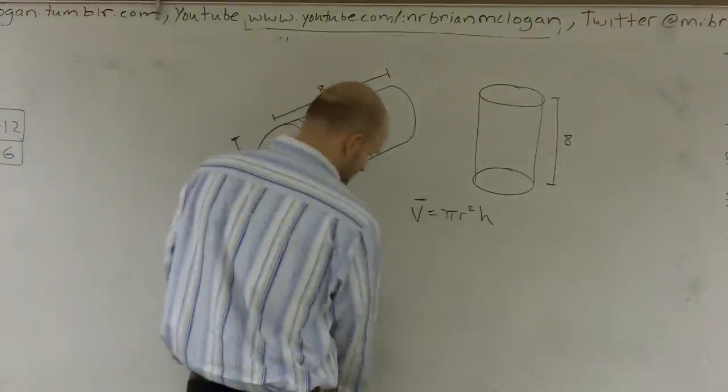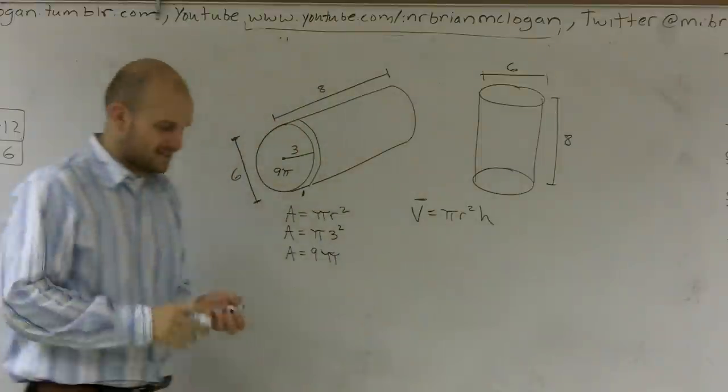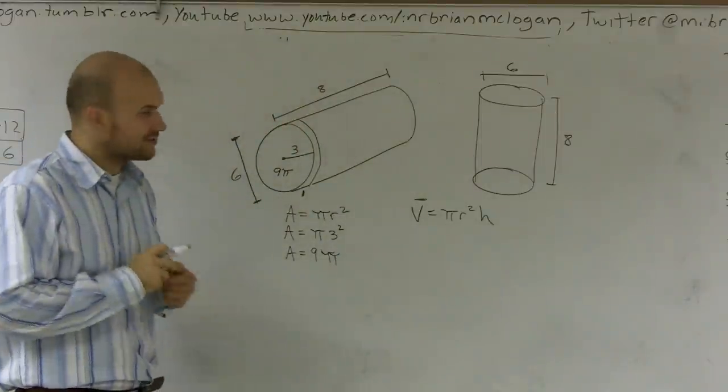And the 6 is the diameter. The 6 is your distance from there to there. So that's not going to be your height. That's just going to be the width or the diameter.